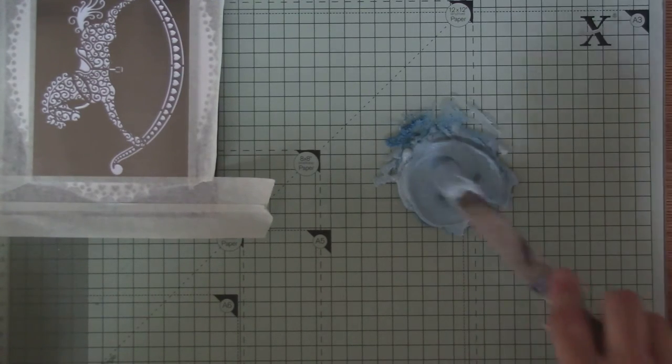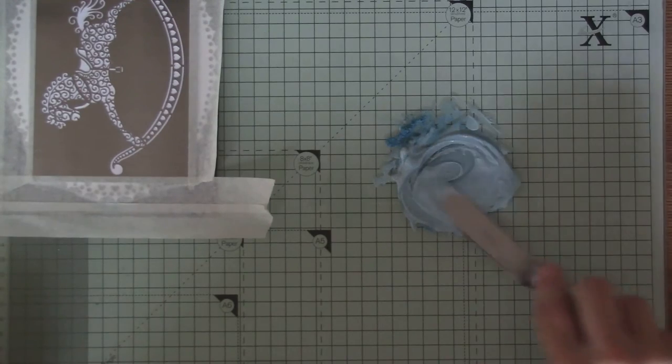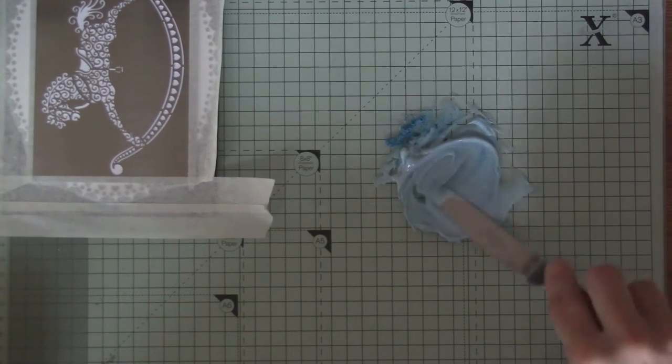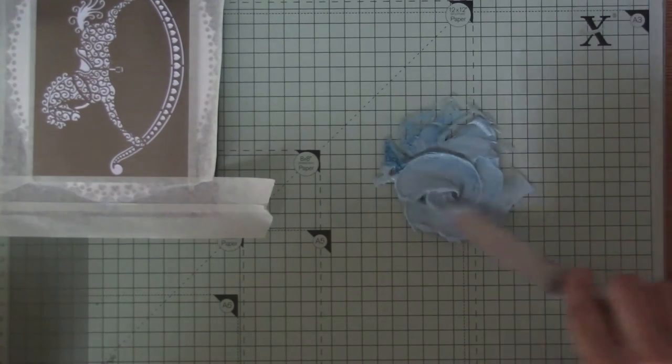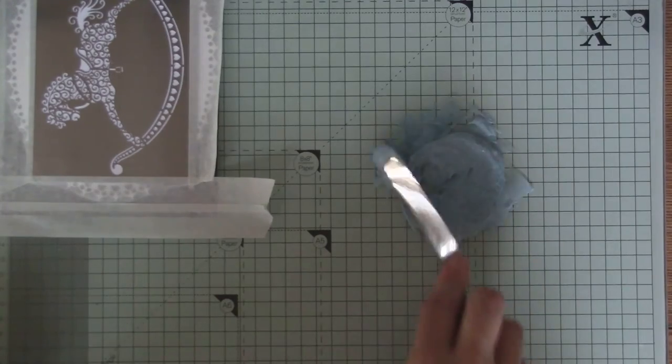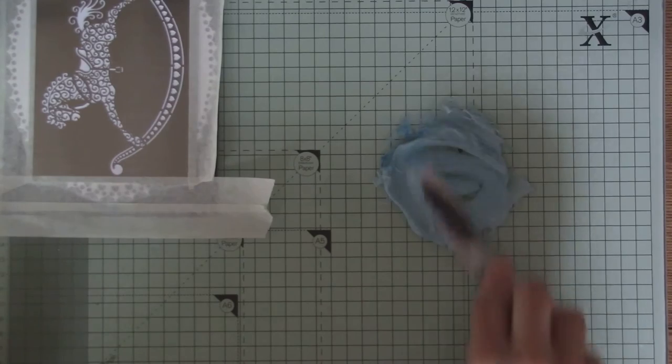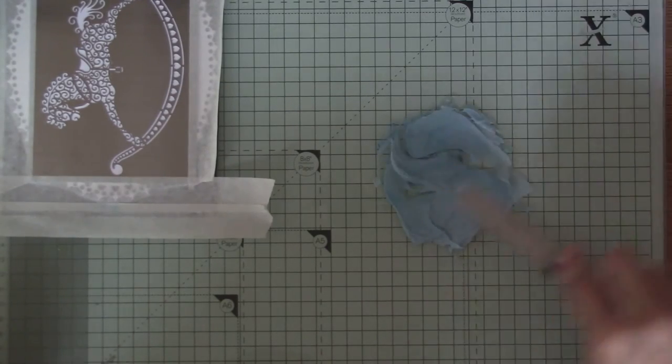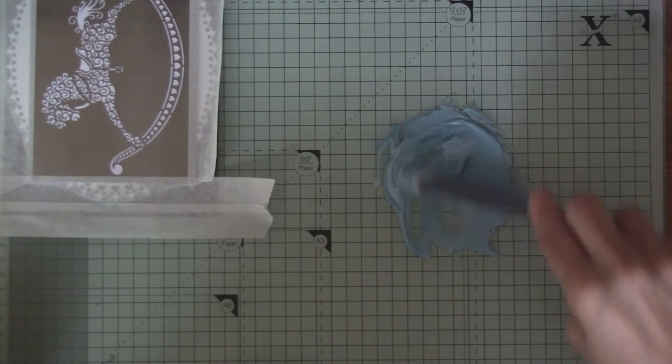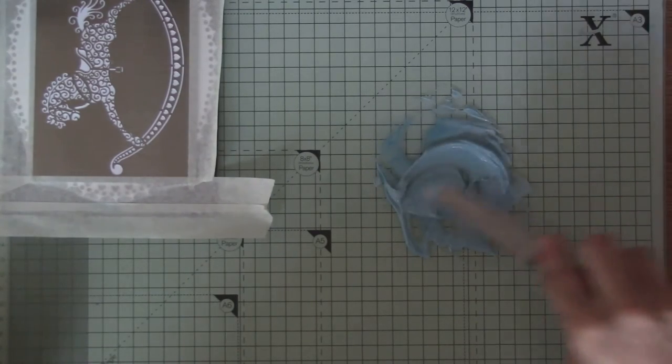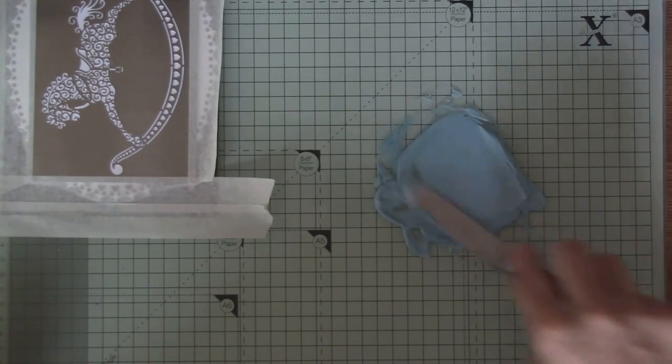Just because we're changing the color of the paste doesn't mean we still can't glitter it. You can do everything still with it, you're not changing the glue content on it, you're just changing the color of it. So make sure it's all worked in, all the powder, and it's nicely worked in.